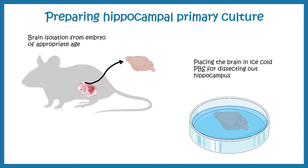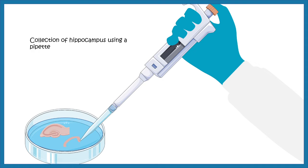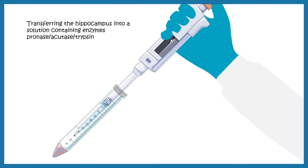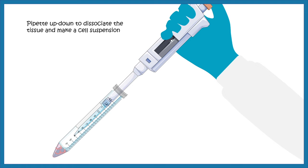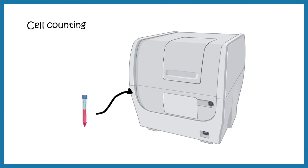Let's look at how to prepare a hippocampal primary cell culture. To culture hippocampal neurons, you isolate the brain from a mouse embryo, taking out the embryonic brain in ice-cold PBS solution. You then micro-dissect the hippocampus and collect it in a tube containing trypsin, acutase, or pronase — enzymes that dissociate the tissue so all cell types are freed. The tissue is placed in the incubator for the enzyme to work, then pipetted vigorously to create a cell suspension.